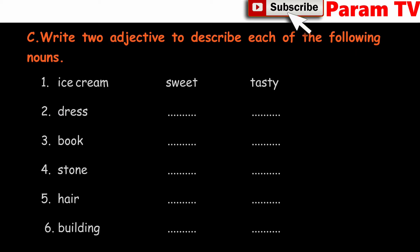Next, write two adjectives to describe each of the following nouns. On the left side, nouns are given and we have to write two adjectives for each. First: ice cream — what adjectives can describe ice cream? Sweet and tasty.